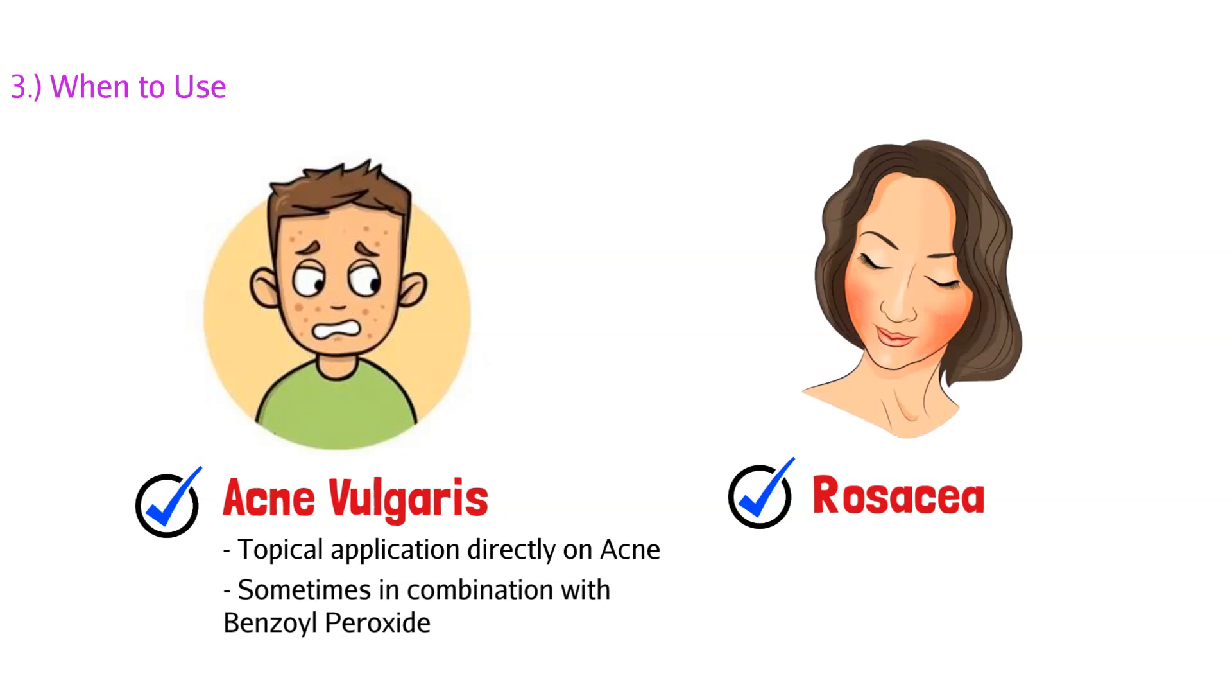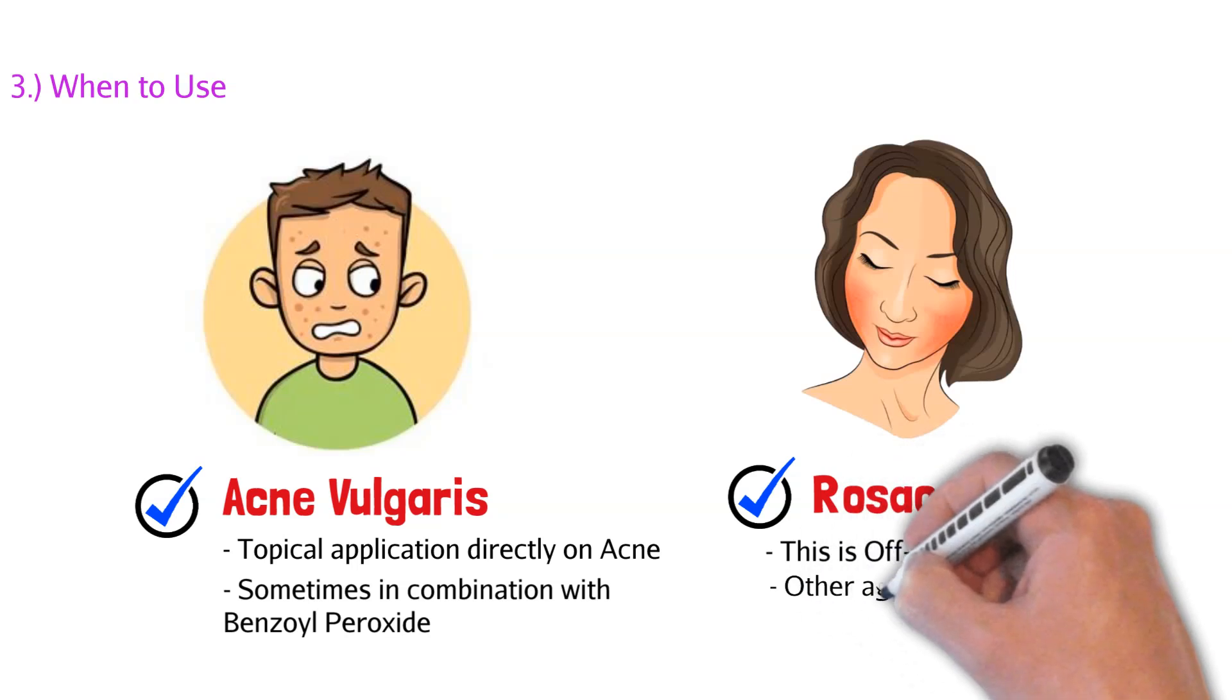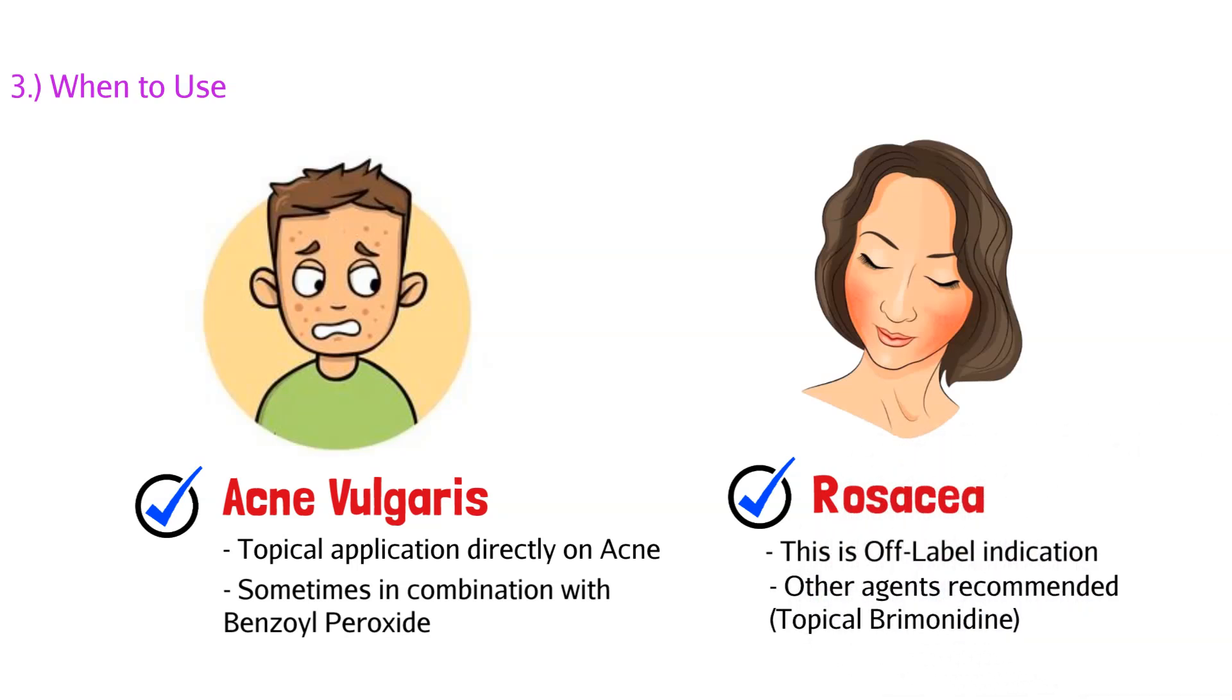Another indication that you could see Adapalene being used is in patients that have something called rosacea. This is where the face or the cheeks are red, not because of acne, but because of an inflammatory process. This is an off-label indication, meaning it's not primarily used for rosacea and it's not cleared for this case. But you'll still see it prescribed sometimes because remember, the process in which Adapalene works is it helps in that inflammatory process. So it makes sense that patients with rosacea can benefit from this drug. Again, it's not first line, it's off-label, they're better off using other agents like topical bromonidine. But let's say if a patient has acne vulgaris and they also have rosacea, well guess what? Two birds, one stone, this might be the go-to.